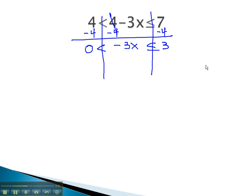7 minus 4 is 3, and now we can isolate the x by dividing all three parts, even the 0, by negative 3. Notice we've divided by a negative, which will require our inequality symbols to flip directions.